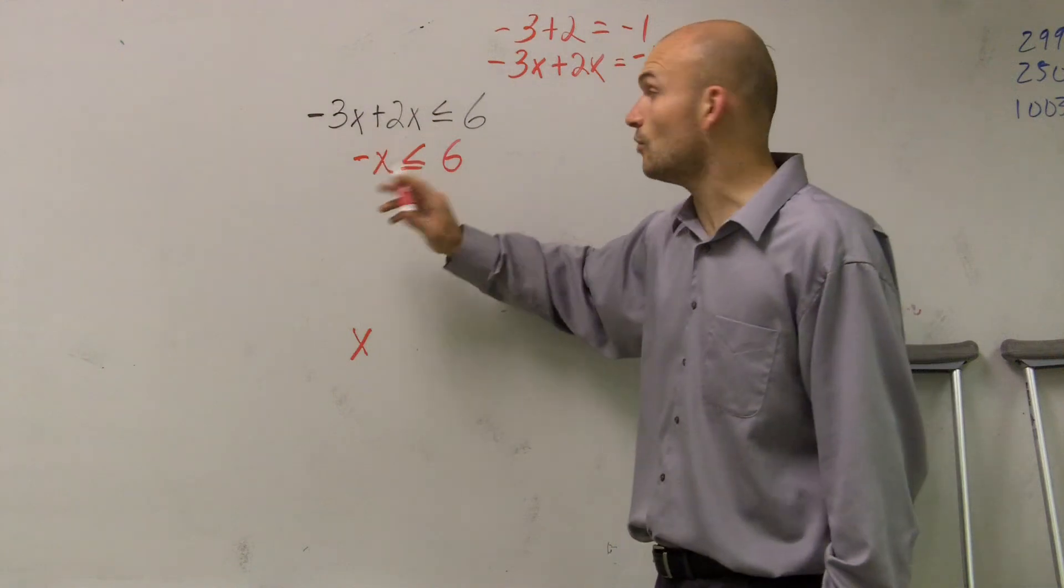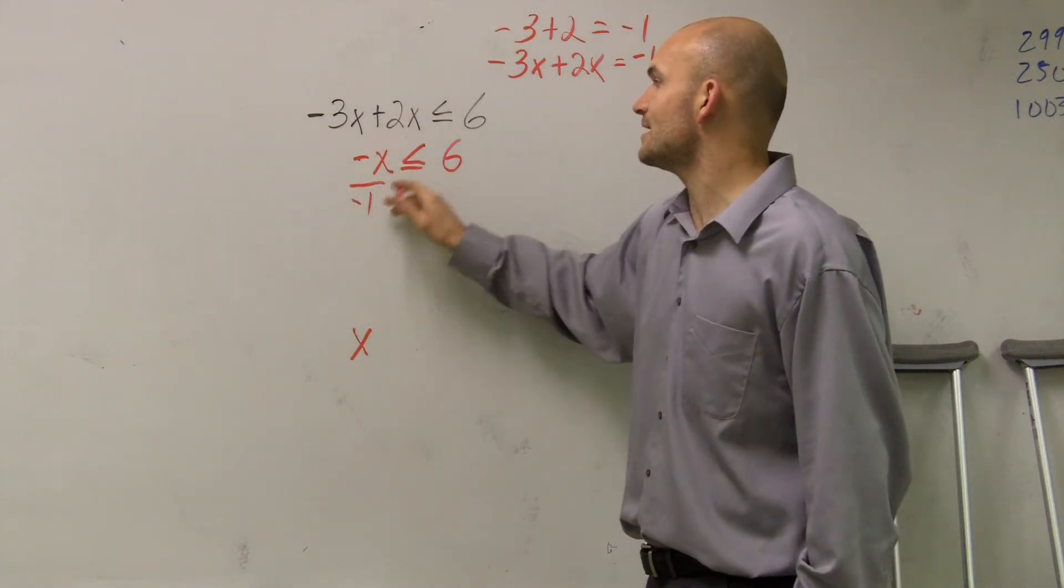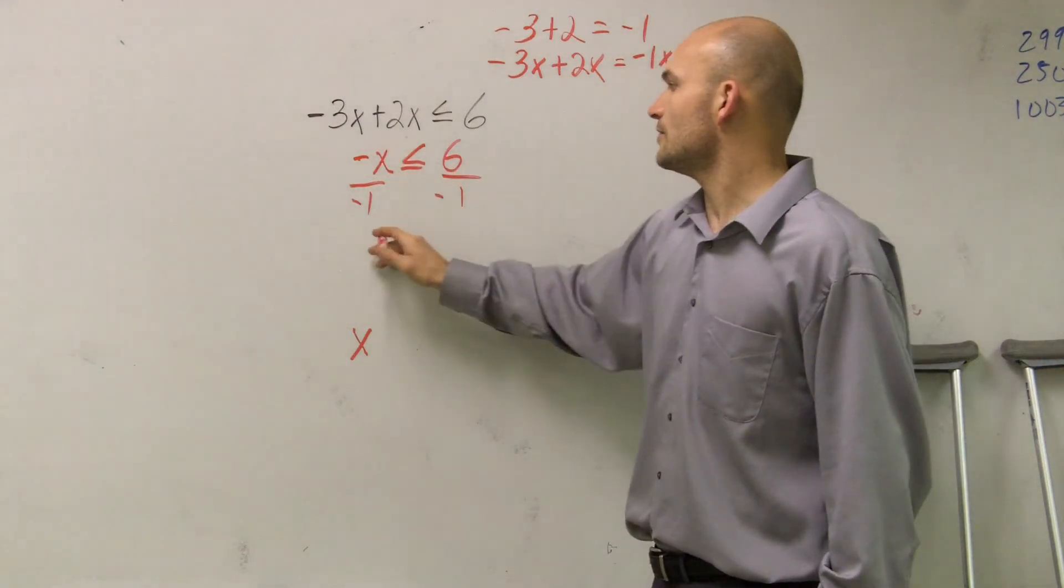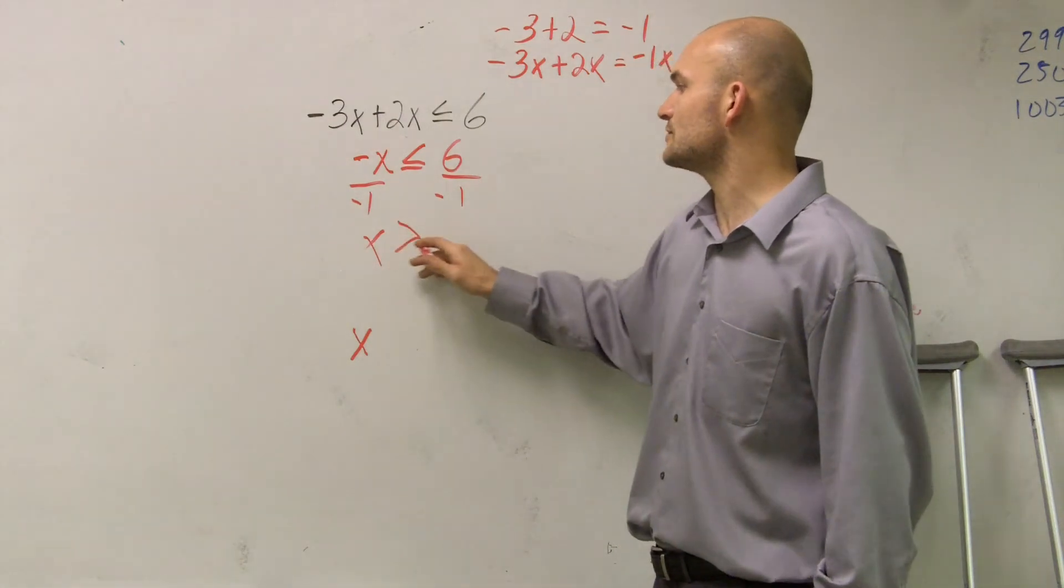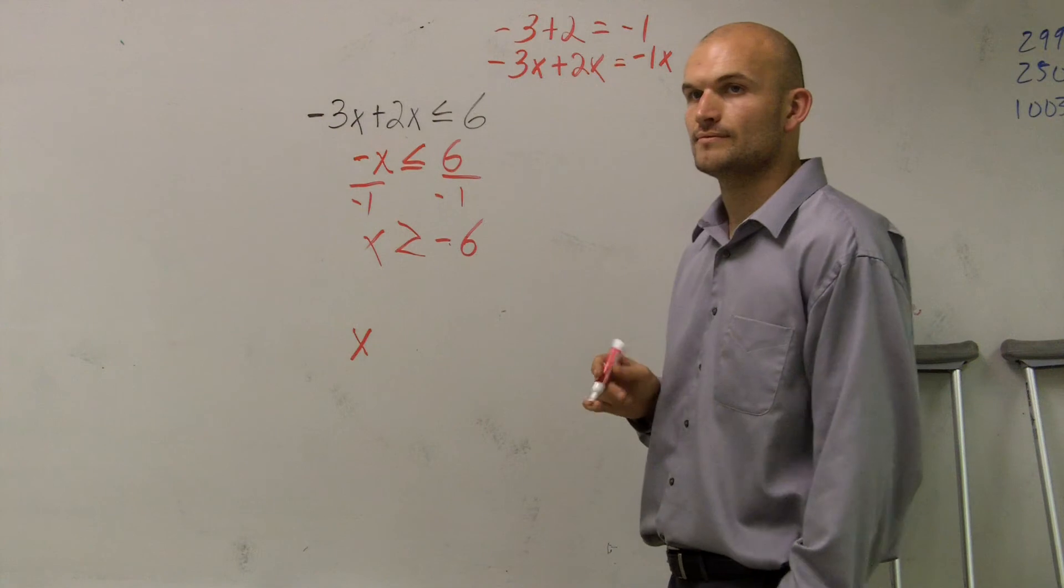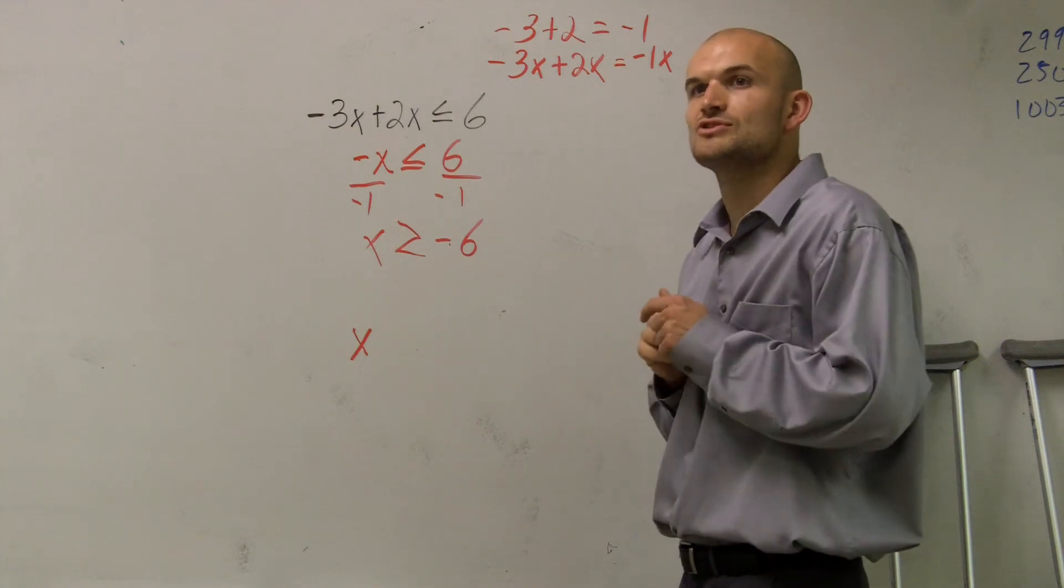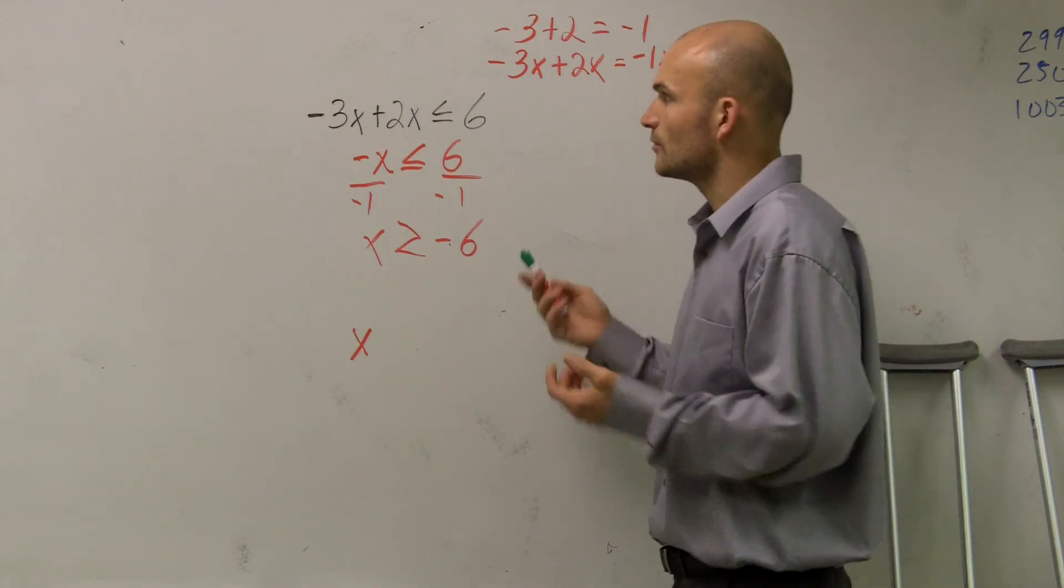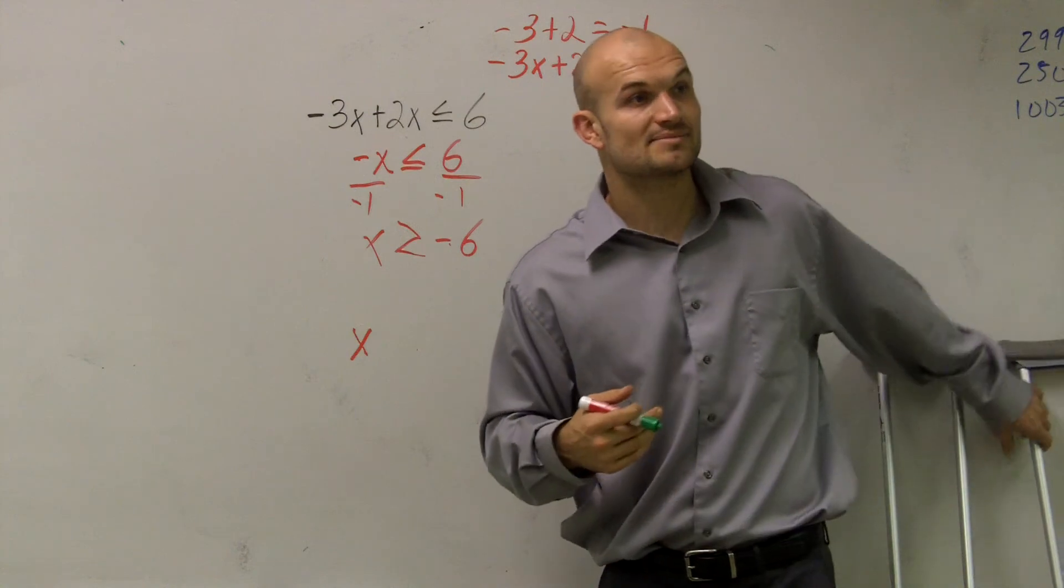Then, to get rid of my negative 1, I need to divide by negative 1. Therefore, x is now, I'm going to flip my sign over there. Okay? So that's how you solve when you have terms on the same side.